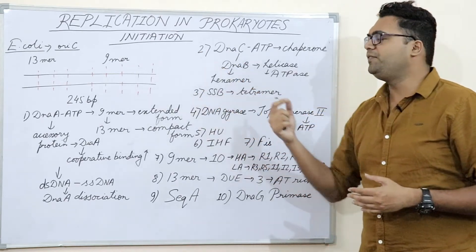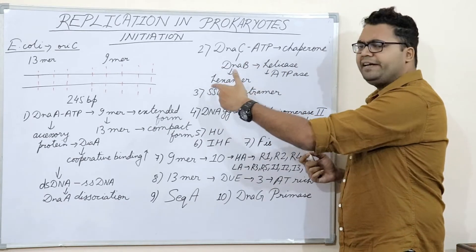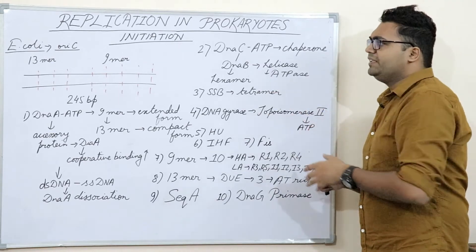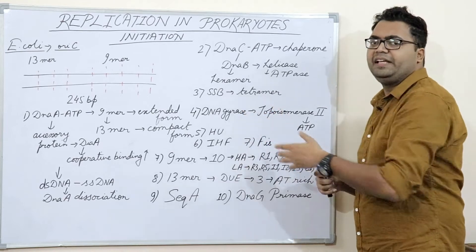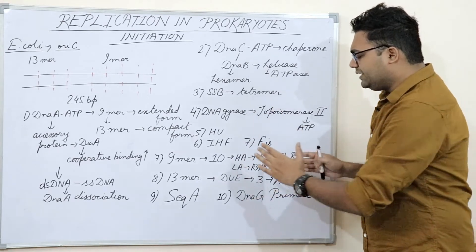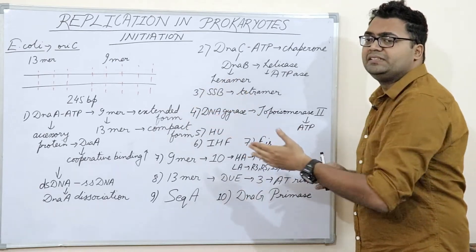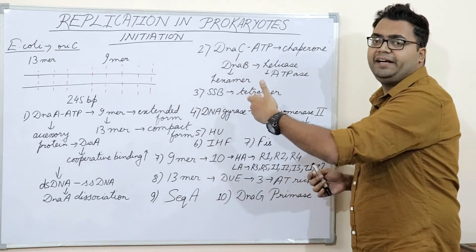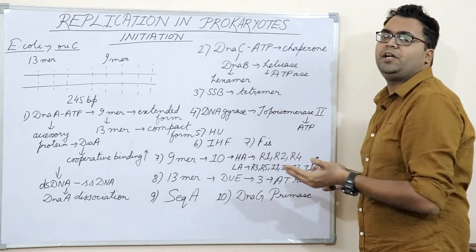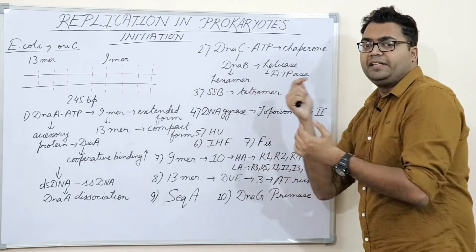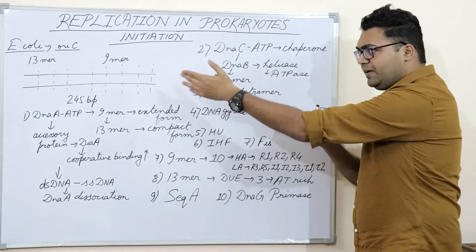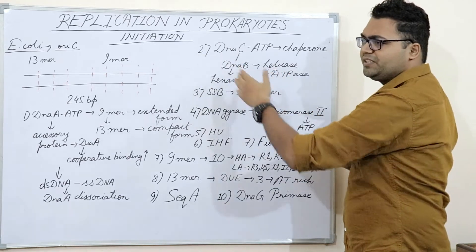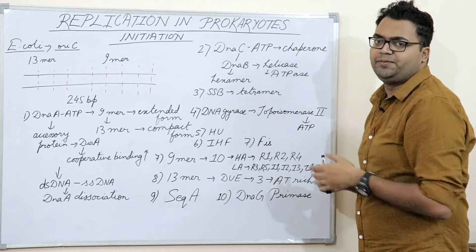This leads to the recruitment and activation of DnaG, which is RNA primase. DnaG will be discussed in depth in the elongation video, but in brief: DNA polymerases do not possess de novo polymerase activity, so DnaG as a specific RNA primase synthesizes approximately a 10-nucleotide RNA primer. This allows DNA polymerases to access the 3' OH for the commencement of the SN2 nucleophilic attack, so that dNTPs can be added and daughter strands formed.